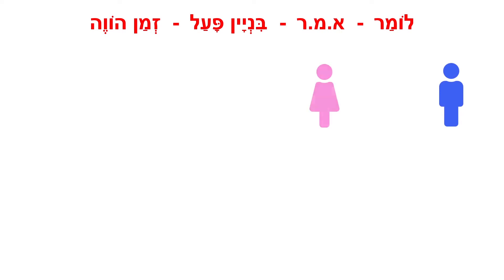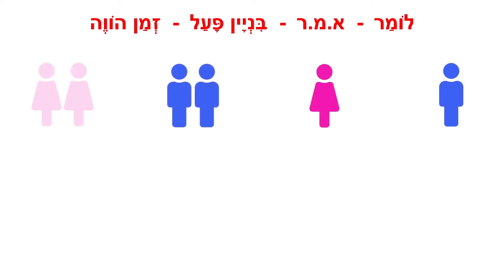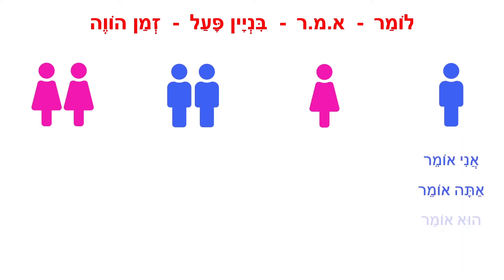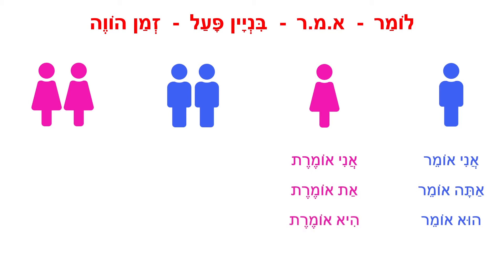So first of all, let's see how the verb Lomar is conjugated in present tense. As we remember, we have in present tense only four conjugations: one for masculine singular, one for feminine singular, one for masculine plural, and one for feminine plural.